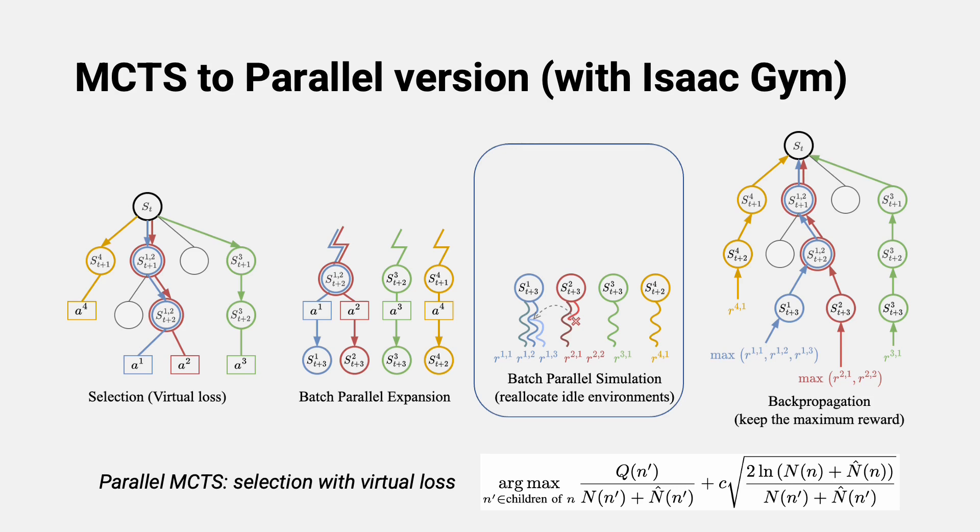Similarly, if a simulation ends sooner, its resource will be reallocated. After batch parallel simulations are completed, back propagation happens, and rewards are updated.